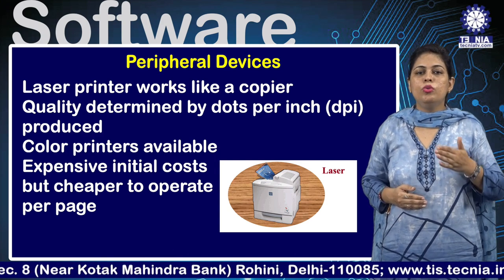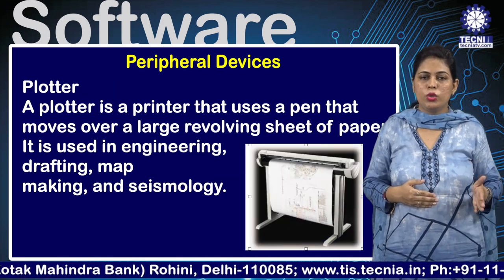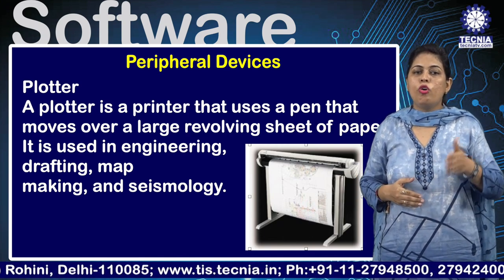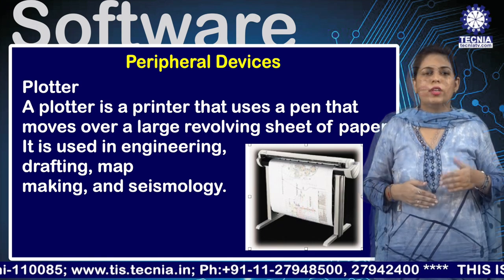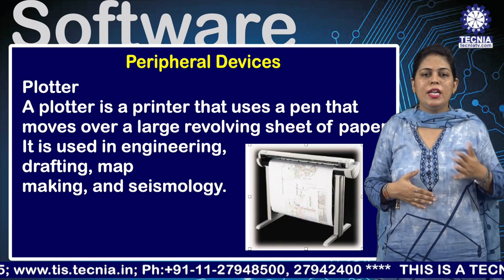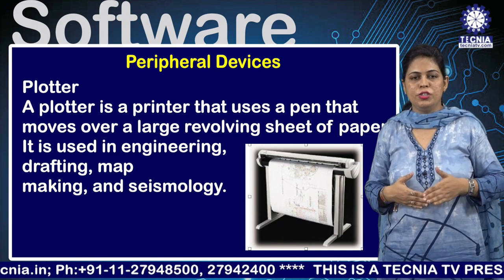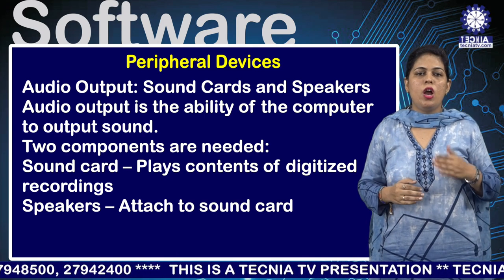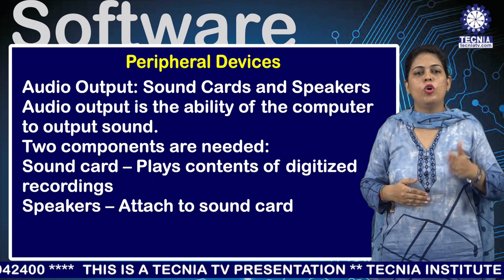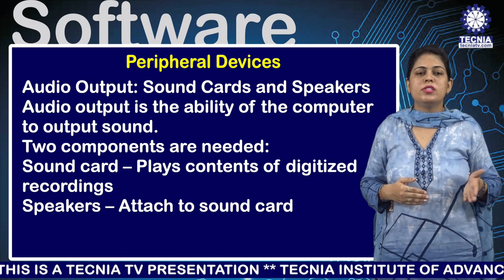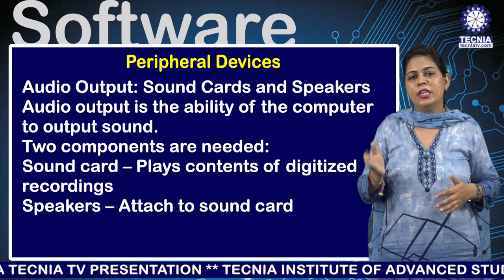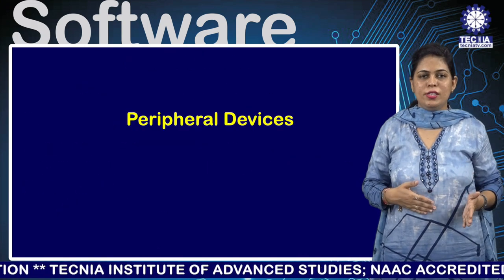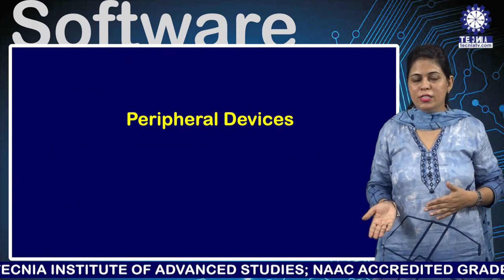A plotter is a printer that uses a pen moving over a large revolving sheet of paper. It is used in engineering drafting, map making, and seismology. Audio output devices include sound cards and speakers. A sound card plays the content of digitized recordings, while speakers attach to the sound card to produce sound output.